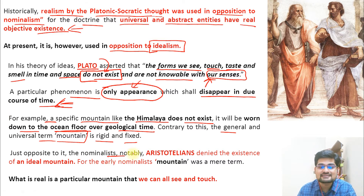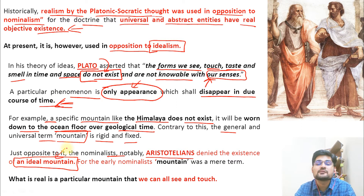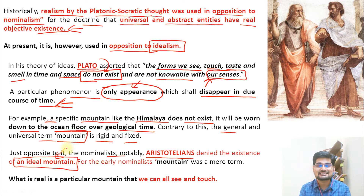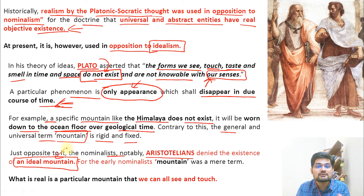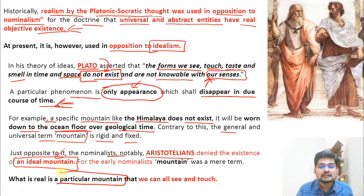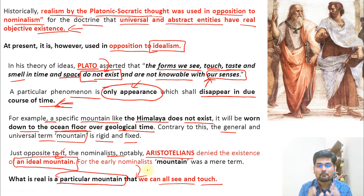Just opposite to this, the nominalists — notably the Aristotelians — denied the existence of an ideal mountain. There was no ideal mountain, opposing the idea of idealism. Plato's idea was more about what lies beyond what we see — the mind aspect. But Aristotle's idea was not about the ideal concept because nothing was ideal according to the nominalists. This was the debate between Plato and Aristotle. For the nominalists, what is real is a particular mountain that we can all see and touch — mountain is as we see it, and if we don't see it, it is not there.